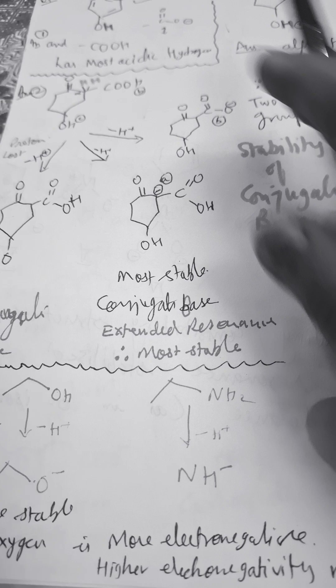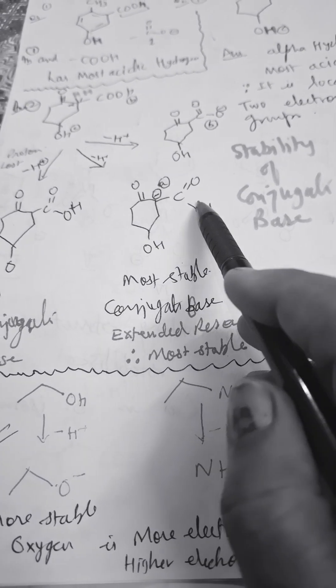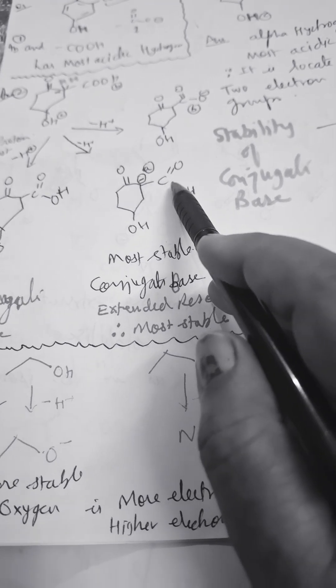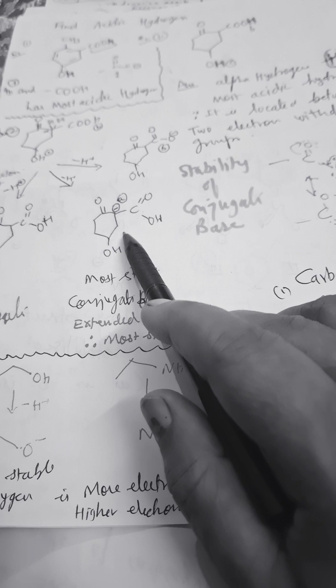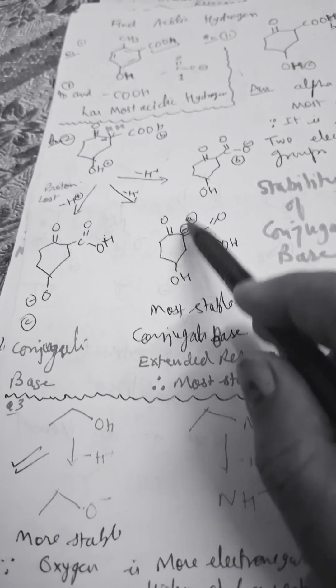But in the case of alpha hydrogen, the charge will be dispersed through the complete extended conjugation. There is more resonance here. That is why the stability of this conjugate base is more. After the loss of alpha hydrogen, this conjugate base is most stable among the others.